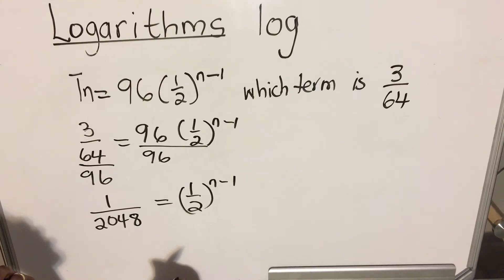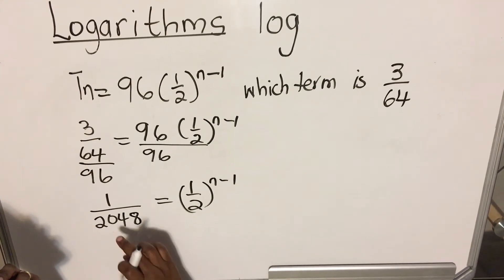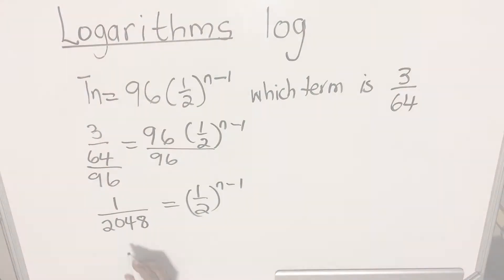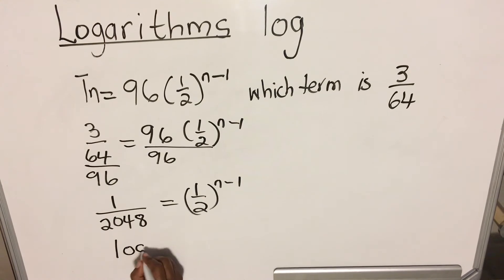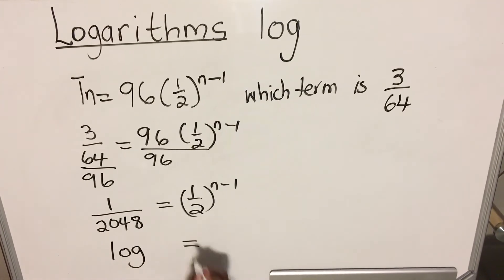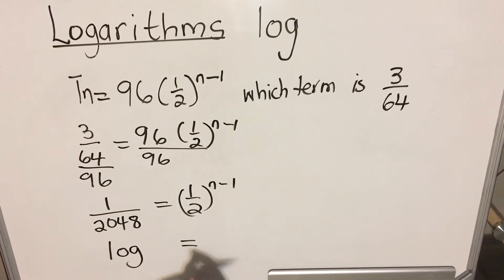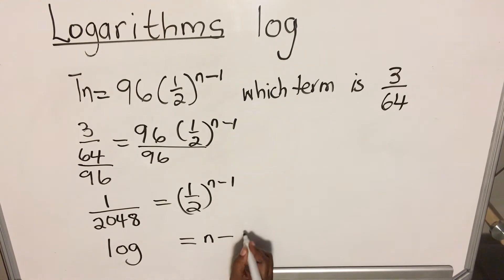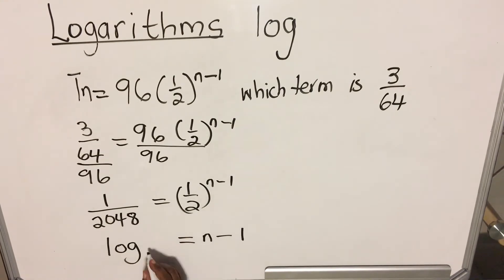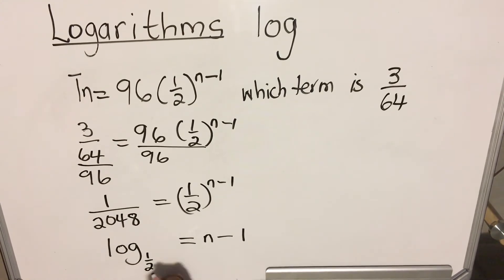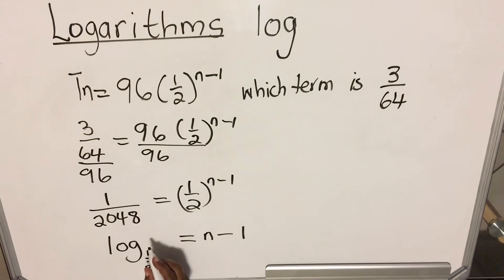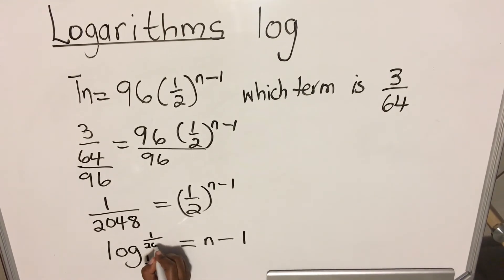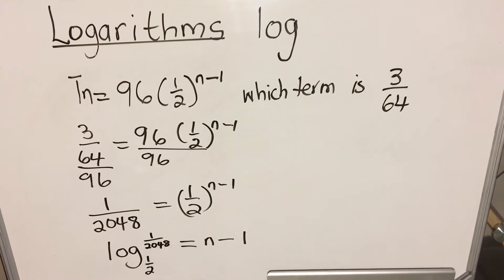So when we're using the log, we're going to use the log and see how we apply it. We're going to write log, and then we write equals to, what is our rule? Log is an exponent. So what is our exponent here? It's n minus 1. What is our base? 1 over 2. The exponent, the base. And then which number do we have? 1 over 2048.